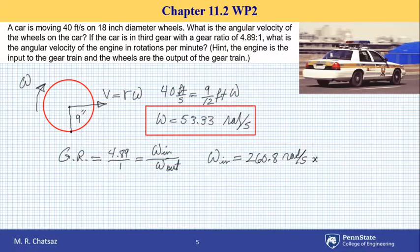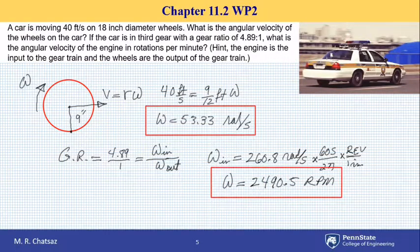To convert it to RPM, I should multiply by 60 seconds per minute over 2π radians per revolution. So multiplying this by 60 over 2π gives us a rotational speed of the engine as 2490 and a half RPM. Thank you for watching.